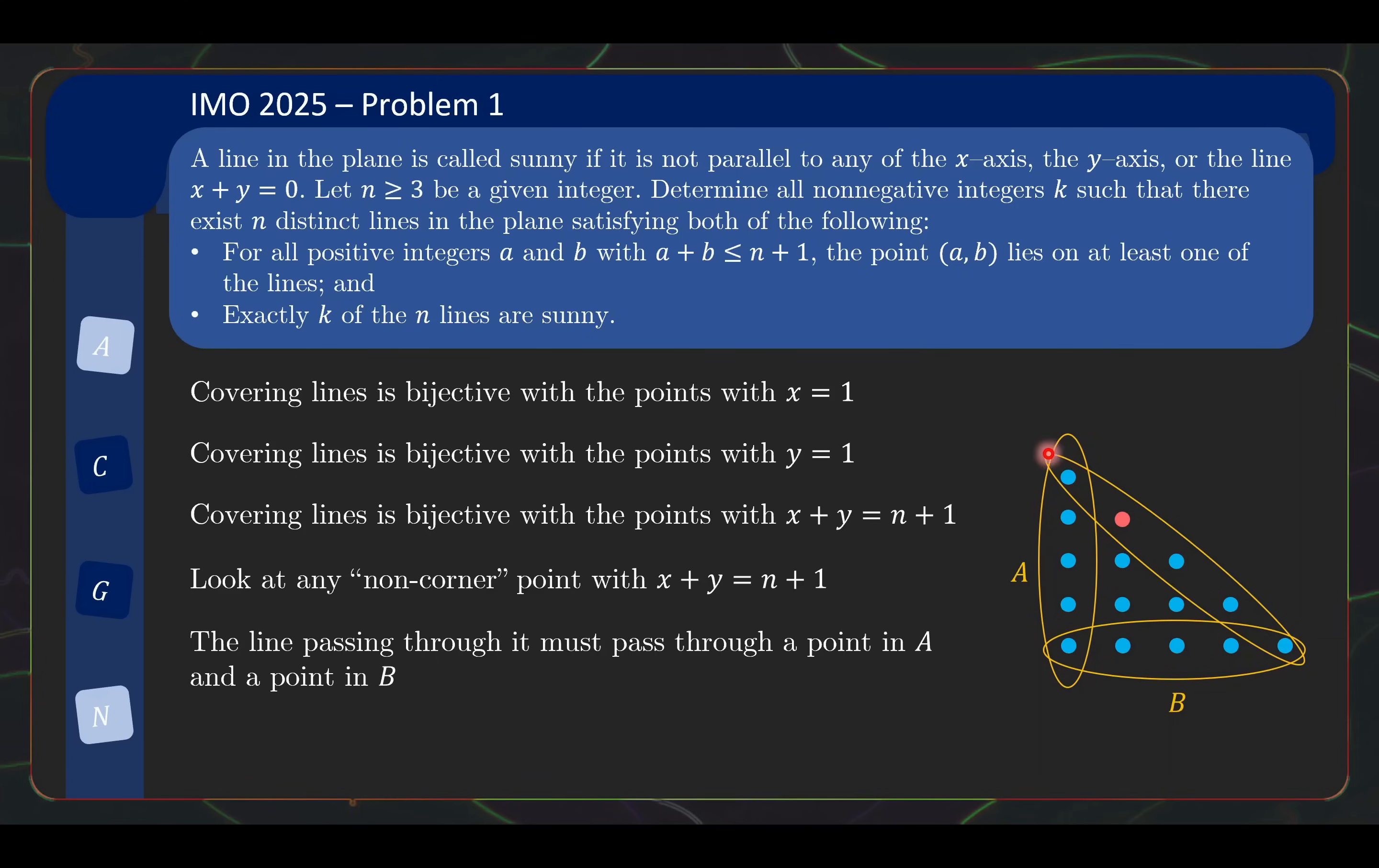So what we learn is, the covering lines is bijective with the points over here. The covering lines is also bijective with the points over here. And the covering lines is also bijective with the points over here. That sounds very fishy and to point out the specifics of why we get contradiction, we just need to look at any of the non-corner points over here. So let's say we look at the red point.